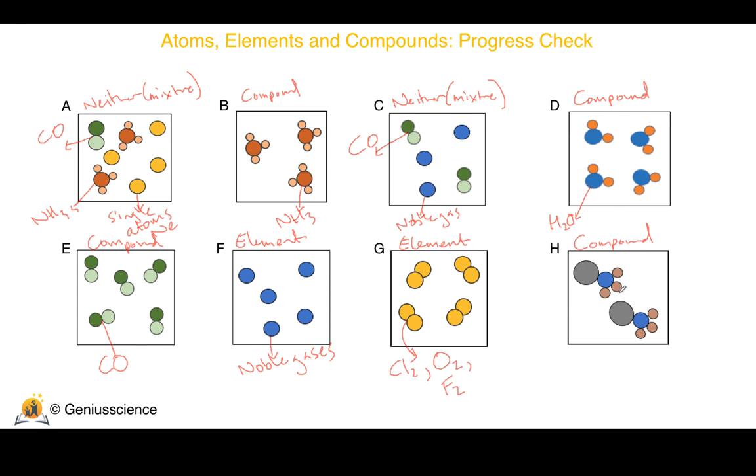It is a slightly larger compound than the others, with three different types of atoms present. A compound like this could be a metal carbonate. For example, calcium carbonate, CaCO3,